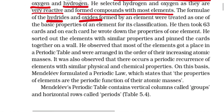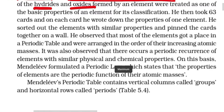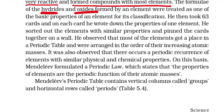He took 63 cards and on each card he wrote down the properties of one element. He sorted out elements with similar properties and pinned the cards together on the wall. He observed that most elements got a place in the periodic table, arranged in order of increasing atomic masses, and that there occurs a periodic recurrence of elements with similar physical and chemical properties.